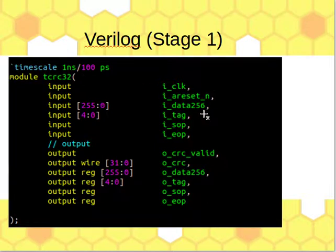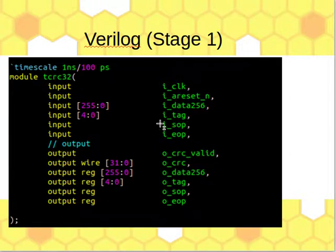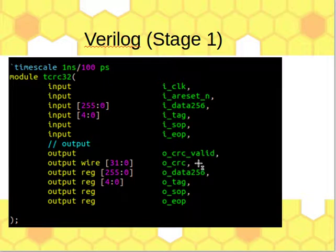The skeleton of the module has clock, reset, a 256-bit data input, and a tag signal that indicates how many bytes are valid. The tag is mainly relevant for the last clock cycle of the packet, since some of the 32 bytes in that cycle may be invalid. SOP and EOP mark the start and end of the packet, and from those we produce CRC valid and the 32-bit output CRC.